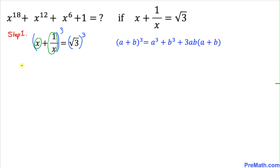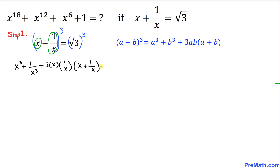So we are going to get x power 3 plus 1 over x power 3, plus 3 times x times 1 over x times x plus 1 over x, equal to square root of 3 power 3. On the right hand side, I have just copied it down over here.